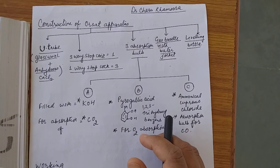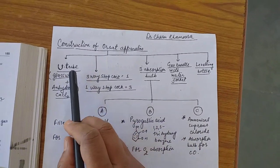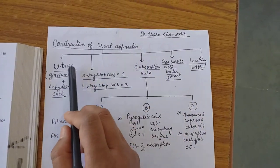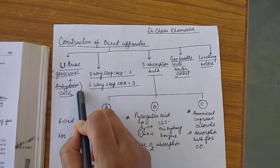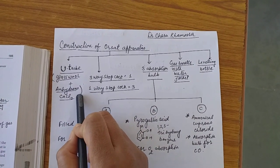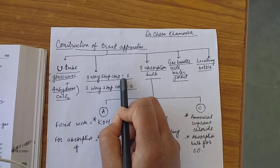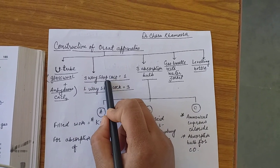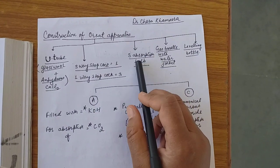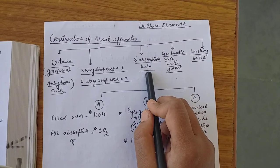Now the next topic which we are doing, that is construction of Orsat apparatus. It is a horizontal tube in which first there is a U-tube which is filled with glass wool and anhydrous CaCl2. After that, in horizontal tube there is a three-way stopcock which are open in three directions.